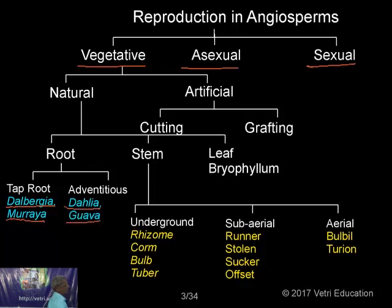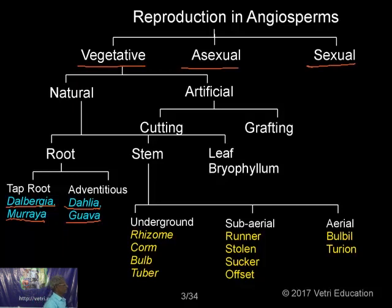Guava is a very common plant — in Tamil we call it koyya. Dahlia is a very common plant belonging to the family Asteraceae, very similar to Sunflower. The flower is similar to Sunflower but available in many colors. Early morning you may have heard vendors calling 'Dara Poo' — it is actually Dahlia, which they mispronounce.